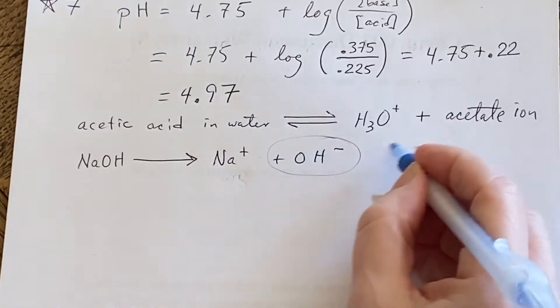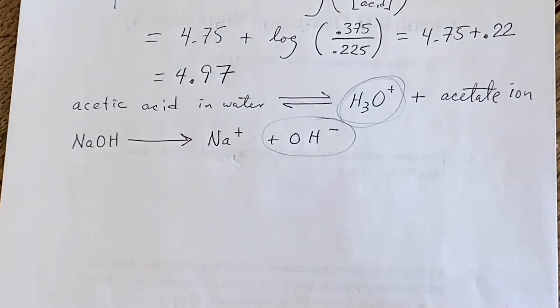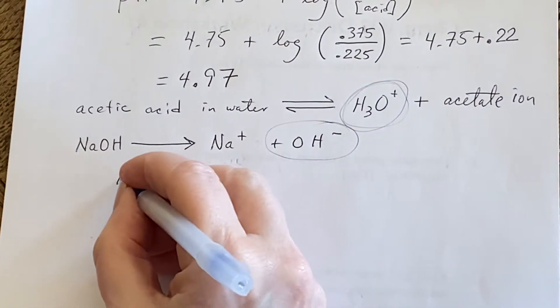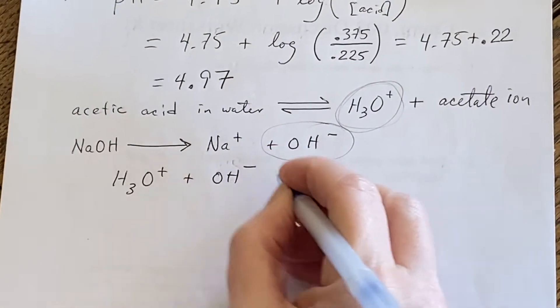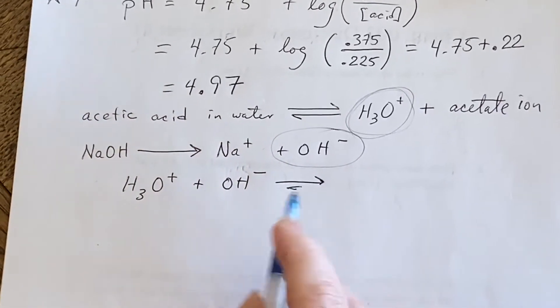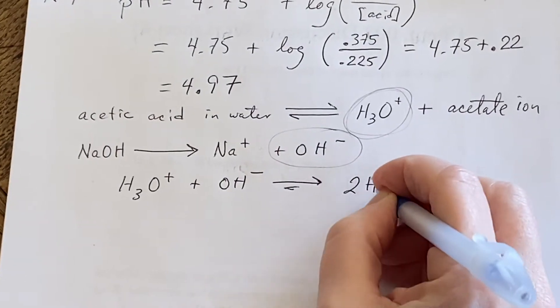These hydroxide ions are going to combine with the hydronium ions. And I know that when they do that, it's an equilibrium, but it's kind of unequal. For the most part, they're just going to become water molecules.